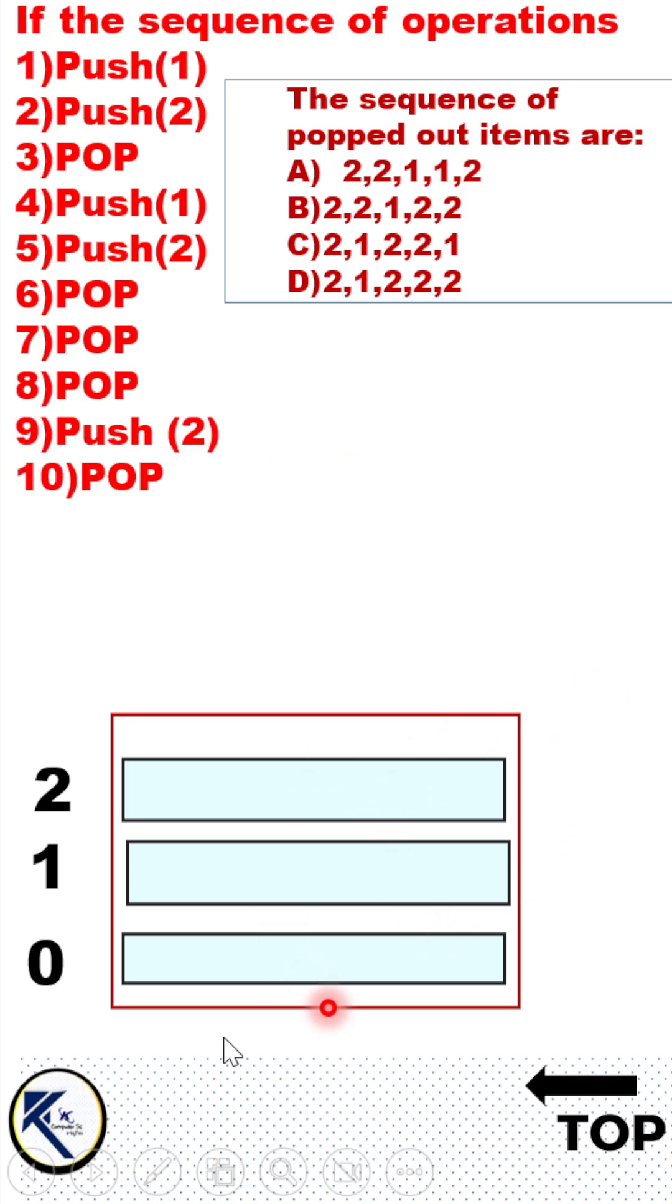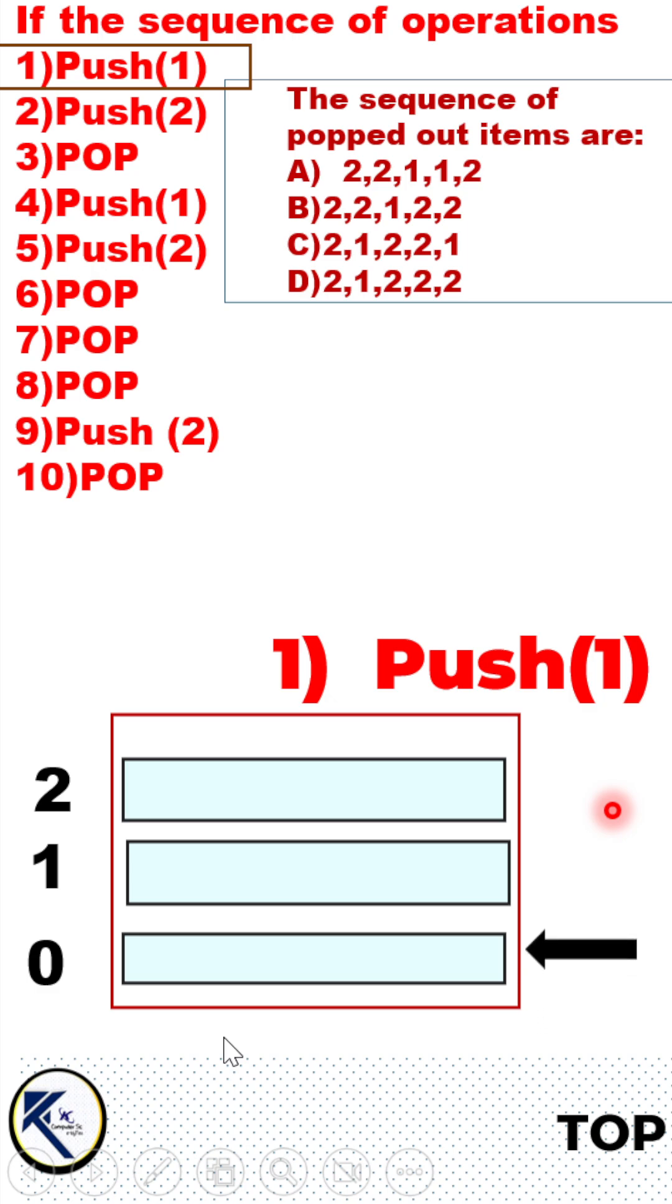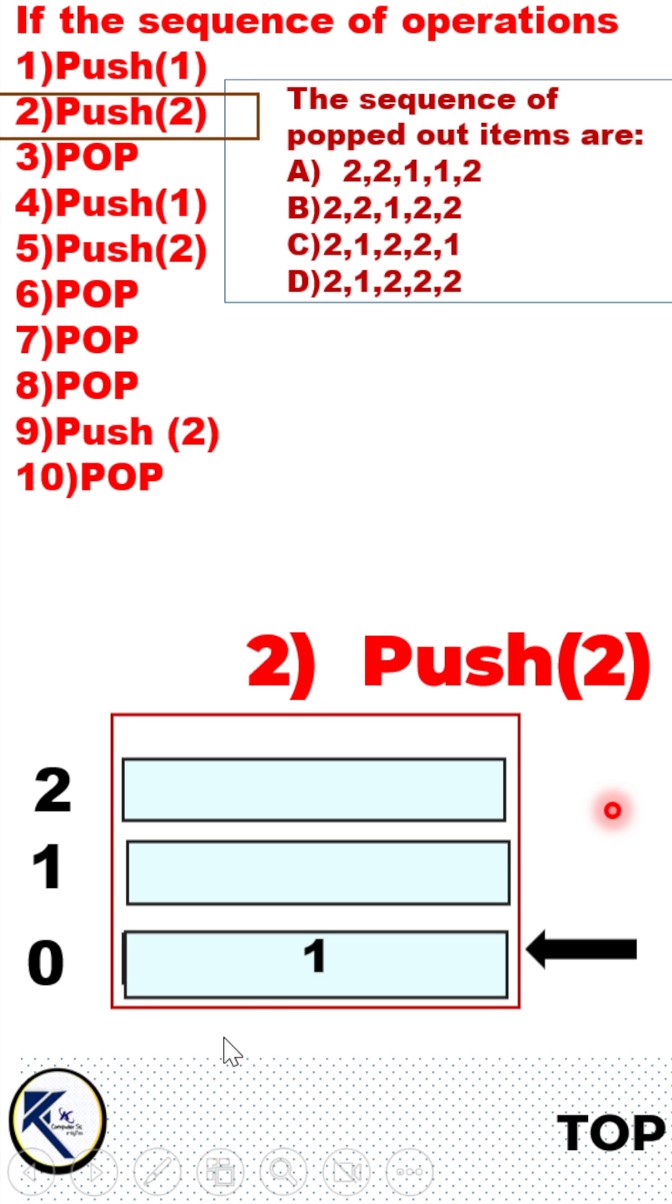This stack is currently empty and the top pointer is located at location minus 1. So first operation is push. With every push we have to increase the top pointer. Increment the top pointer and then push the value. Second operation is also push.